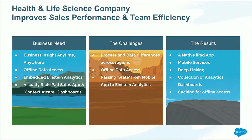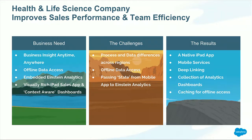It was not out-of-the-box functionality available at that time, and Appirio ended up building a solution for it. The result is a native iPad app using all the mobile services I talked about — like push notification, geo notification to track the doctors, and deep linking where from the mobile custom app they can move to the Einstein Analytics dashboard. We built a rich collection of analytics dashboards, and data was also cached so that when they were off network, they were able to access their information and the dashboards. With that, I'm going to hand it to Dave to talk about the architecture and kick off with a demo.